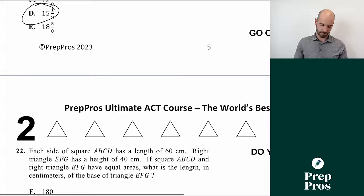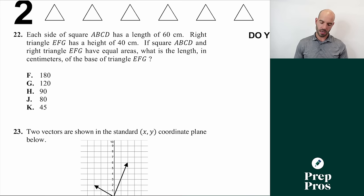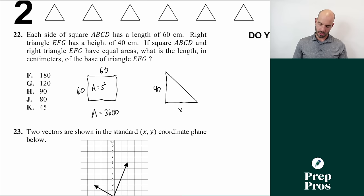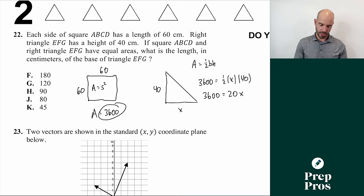Number twenty-two: each side of a square has length 60, and a right triangle EGF has height 40. If the square and right triangle have equal areas, find the base of the triangle. Area of the square: 60 times 60 equals 3,600. Set equal to the triangle area: 3,600 equals one half times base times 40. Simplifying, one half times 40 equals 20, so base equals 3,600 divided by 20 equals 180. The answer is F.